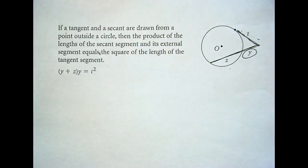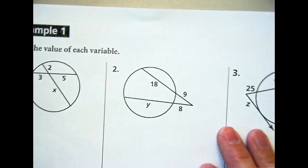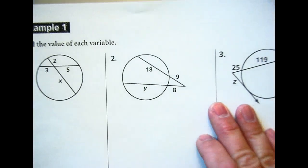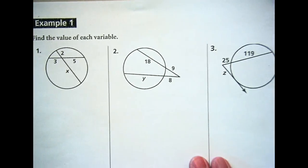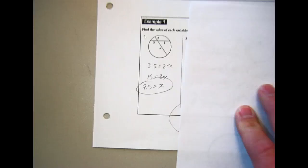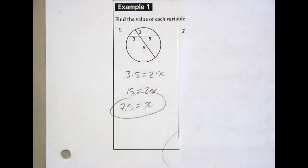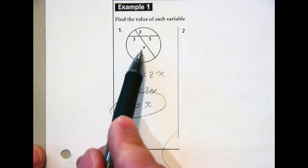Okay, let's try number one on your assignment. We're going to work through one, two, and three together. This is 'find the value of each variable' — work with your group to apply those formulas. For number one: three times five equals two times x, so 15 equals 2x, giving us seven and a half.